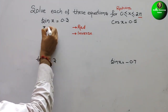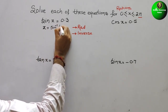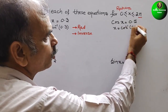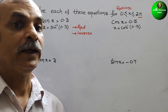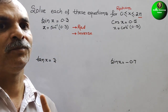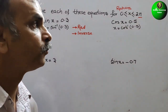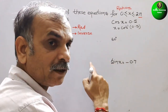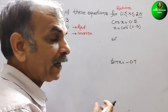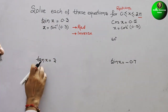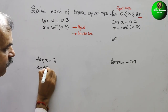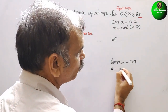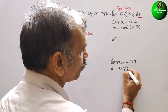So here: x = sin⁻¹(0.3), x = cos⁻¹(0.5). We know that cos(1/2) = 60°, so that value is 60 degrees. Next, x = tan⁻¹(3). And for the last one, sin x = −0.7, so x = sin⁻¹(−0.7).